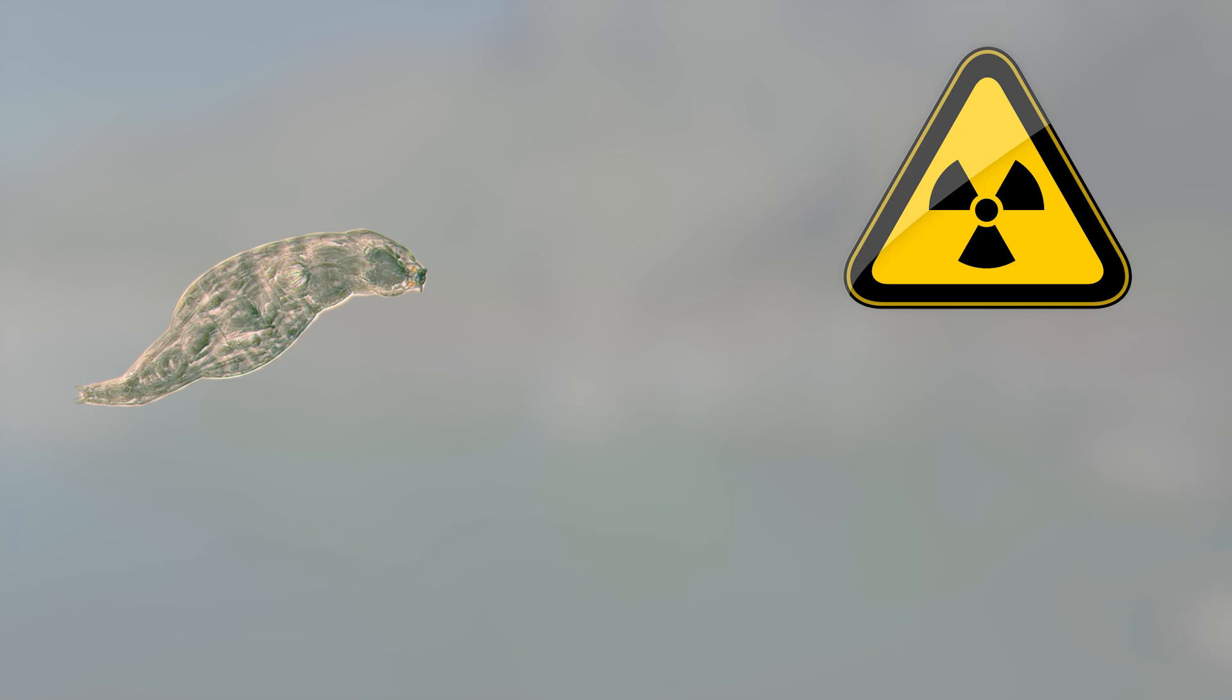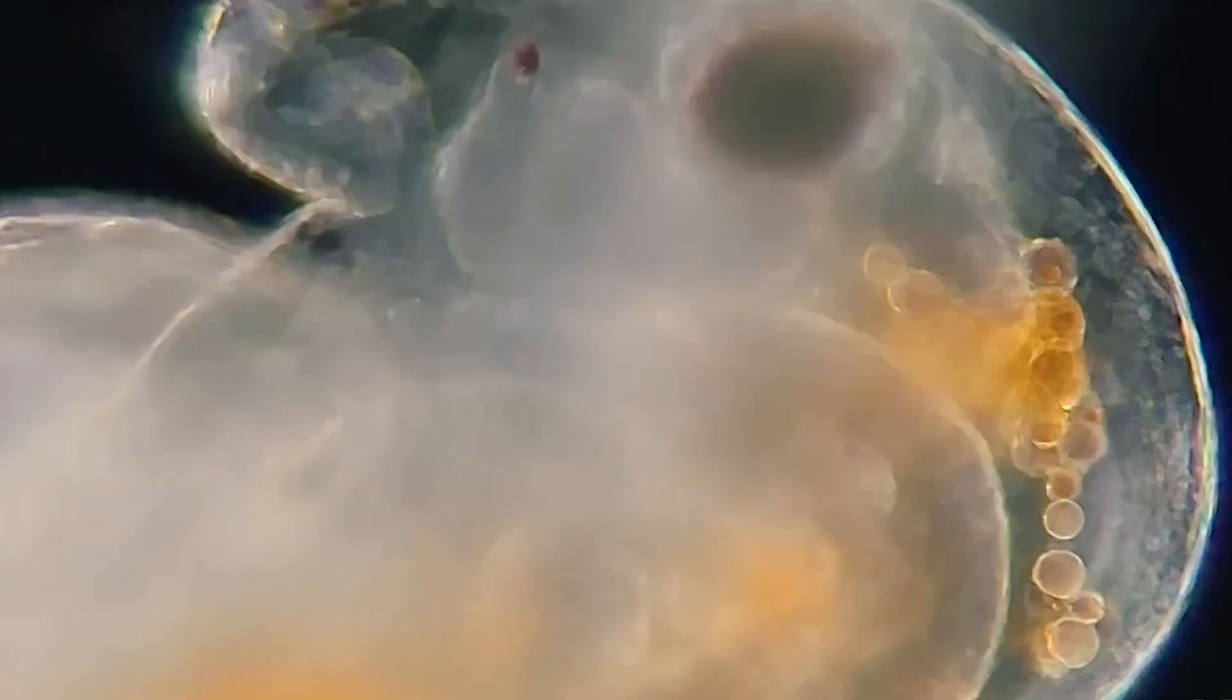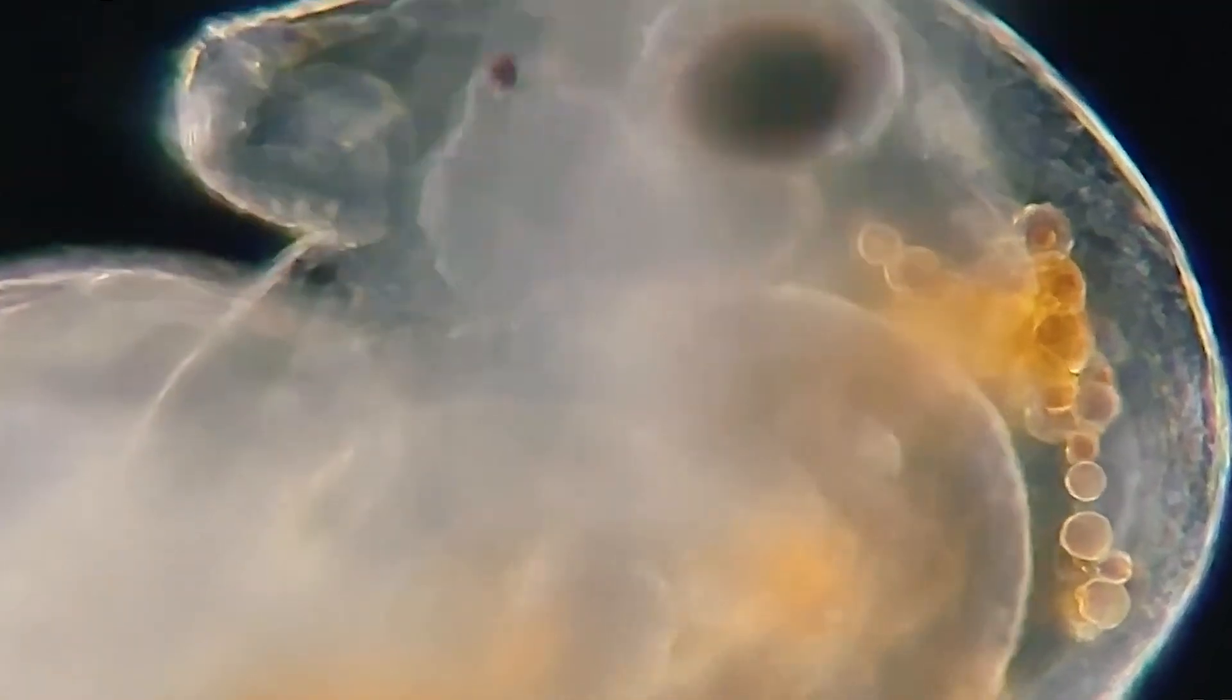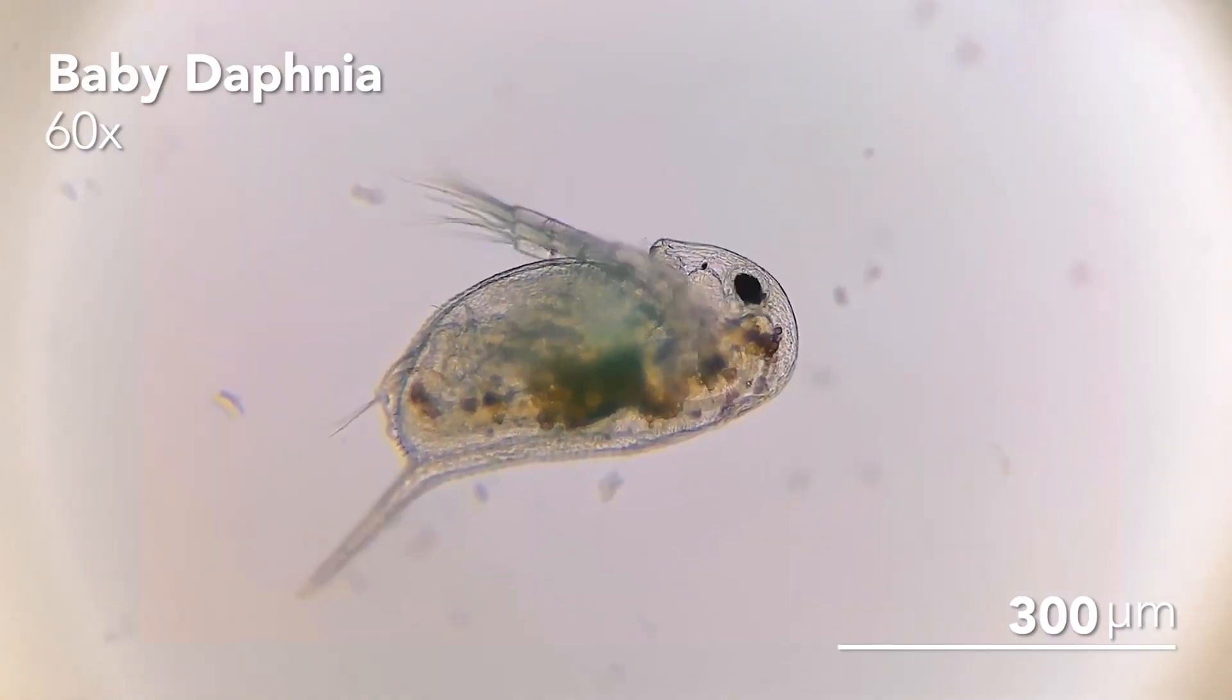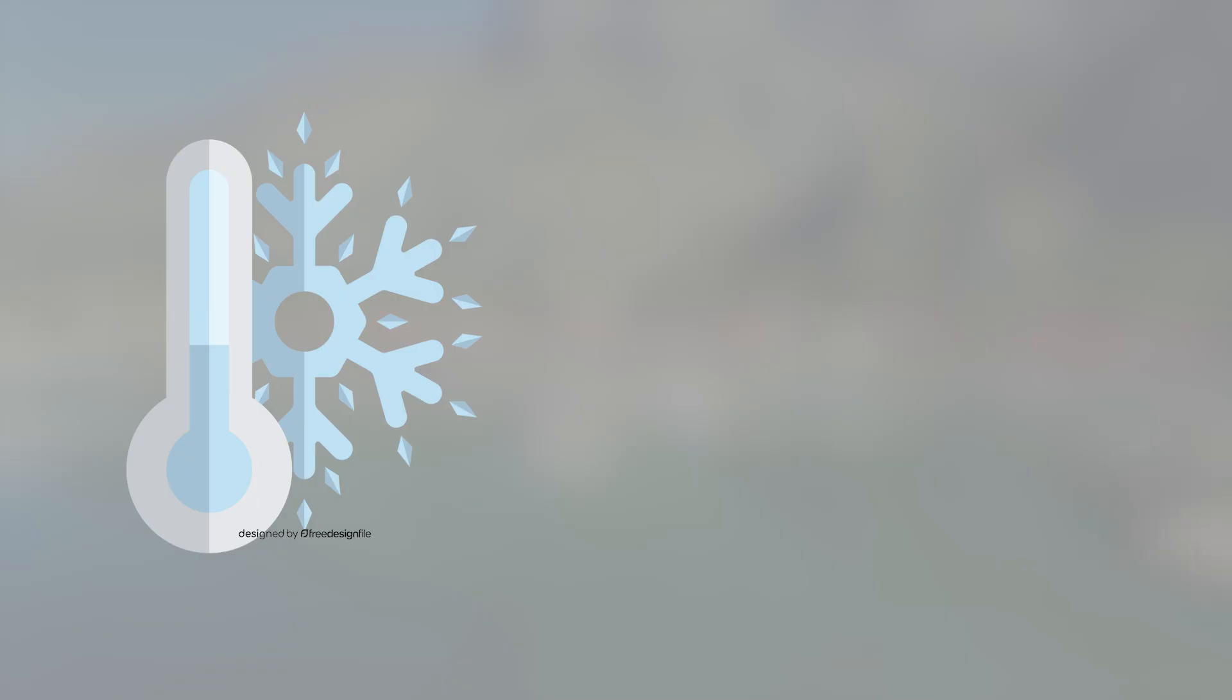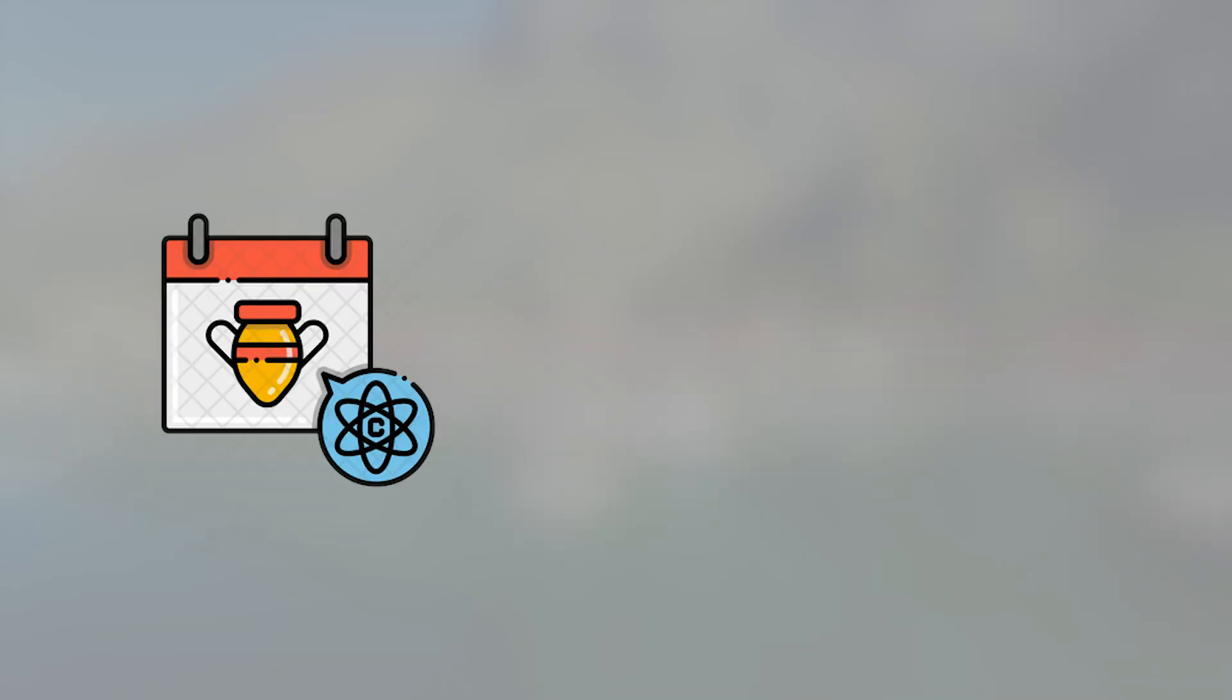They're known for their toughness. Rotifers can survive radiation, dehydration, starvation, even the vacuum of space. Most can dry out for years and spring back to life when rehydrated. But this one didn't just spring back—it restarted after being frozen in permafrost for what carbon dating confirmed was over 24,000 years.